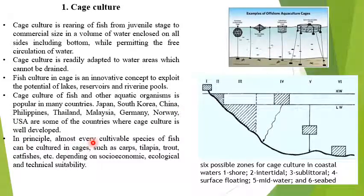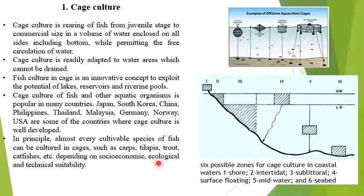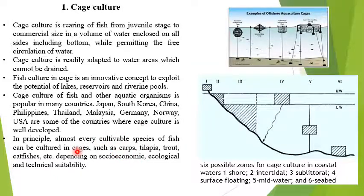In principle, almost every cultivable species of fish can be cultured in a cage — such as carp, tilapia, trout, and catfish — depending upon socio-economic conditions and ecological and technical suitability. Different fishes suit different ecological conditions.